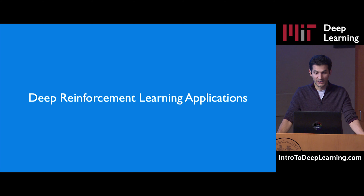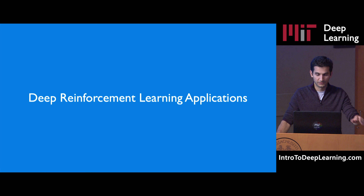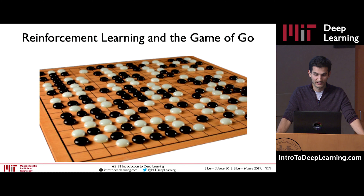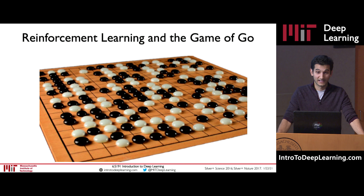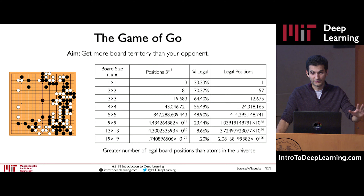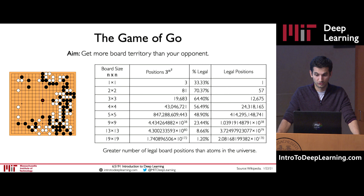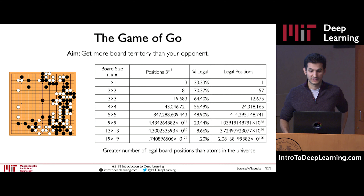Now we've covered the fundamentals behind value learning, policy learning, and policy gradient approaches. Very briefly, I'll talk about some exciting advances in the game of Go, where reinforcement learning agents were put to the test against human champions. A quick introduction: Go is played on a 19 by 19 grid between two players — white and black — with the objective of occupying more territory than your opponent. The problem is extremely complex: the full-size 19×19 board has a greater number of legal board positions than atoms in the entire universe — that's 2×10^170 positions.